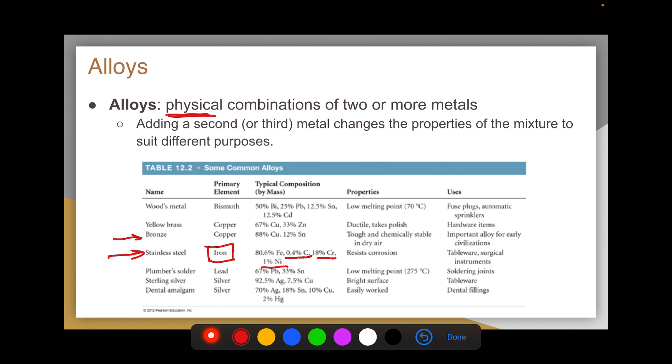Another really common example is bronze, which is primarily copper alloyed with a little bit of tin, and that makes it a little more chemically stable.